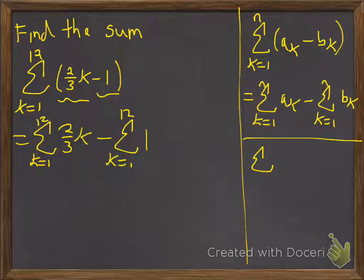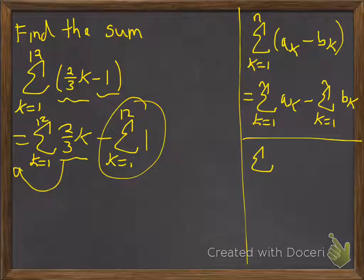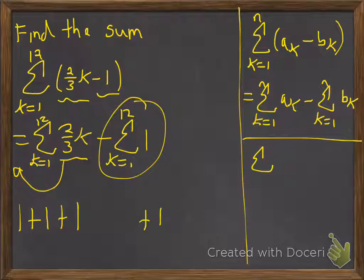What we're going to do now is we're going to be allowed to factor the 2/3 out, and in this particular summation it means 1 plus 1 plus 1, 12 times. And so if we add 1 twelve times, it's just 12.